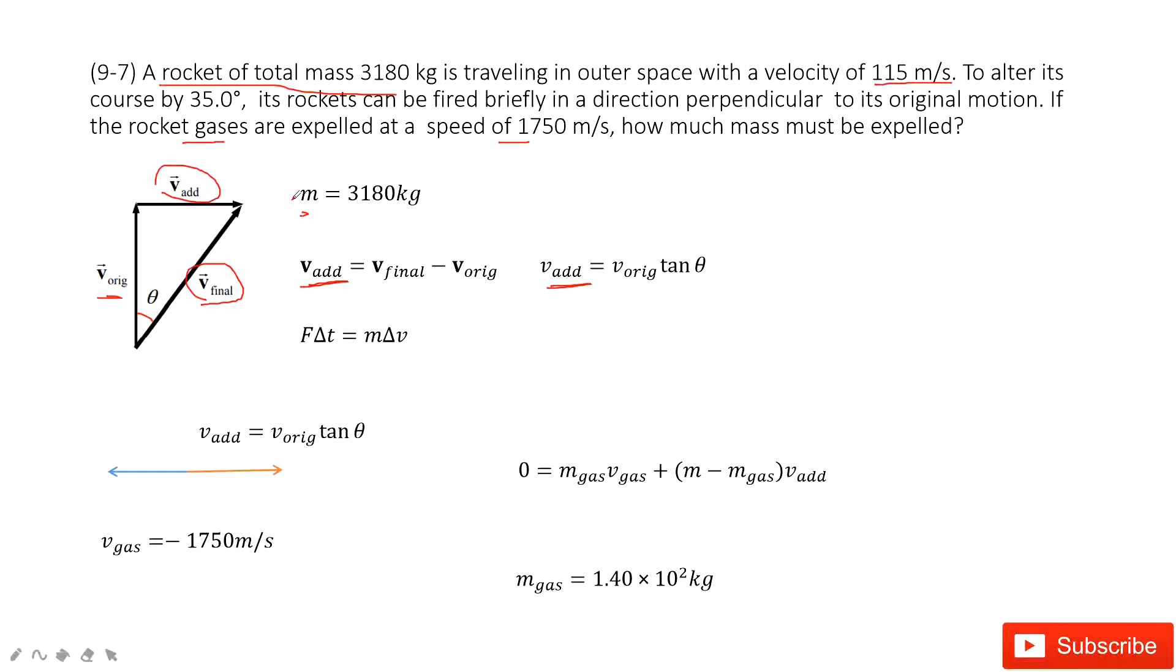And you can see V_original is given as 115 meters per second. Theta is 35 degrees. And then the next one, we need to find how much the gas mass is. So that means at this point, the rocket is there, and then some part of the rocket moves forward and some part moves backward.